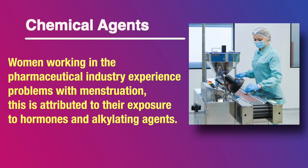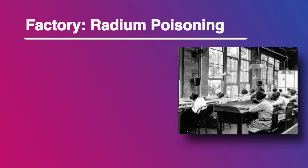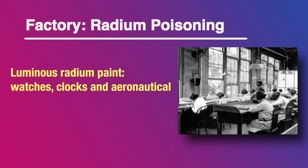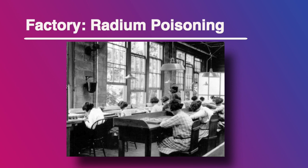Chemical agents in the workplace can affect the normal functioning of the ovaries. Women working in pharmaceutical industries experience problems with menstruation attributed to exposure to hormones and certain alkylating agents. As a case study, a factory incident due to radium poisoning, popularly known as the 'Radium Girls,' involved radium paint — luminous radium paint — used to paint watch dials. In some factories, only women were employed in this entire sector. They were painting the dials and were also asked to point their brushes to their lips or cheeks to avoid touching any cloth or fiber for more effective painting of the watch dials.